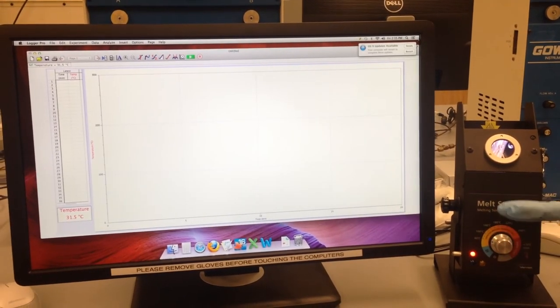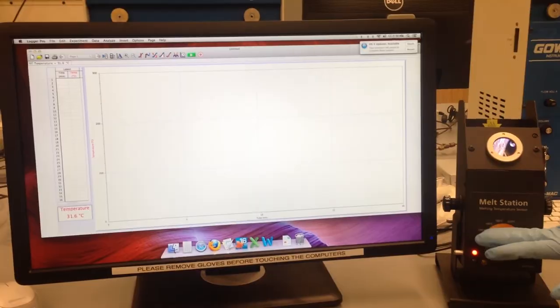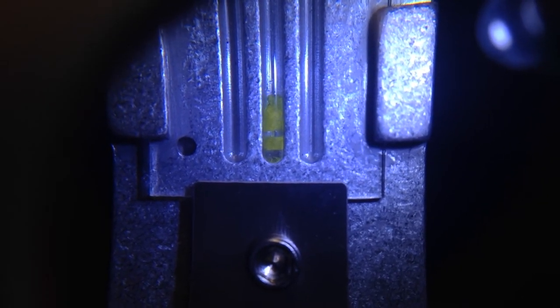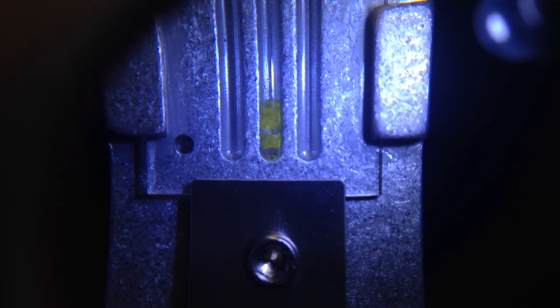Turn off the meltemp between trials so that it can cool down. Watch until you see the sample start to melt. Record the range from when it begins to melt till it's completely liquid.